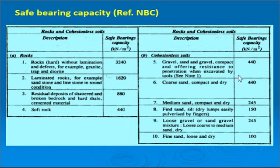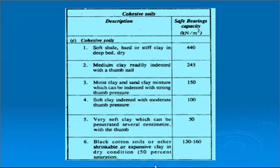For cohesionless soils such as gravel, sand and gravel, the value is 440 kN/m². For coarse sand, compact and dry, it is also 440 kN/m². All values are tabulated. For cohesive soils, soft clay, hard or stiff clay in deep beds is 440, and likewise different values of bearing capacity are given for different categories.